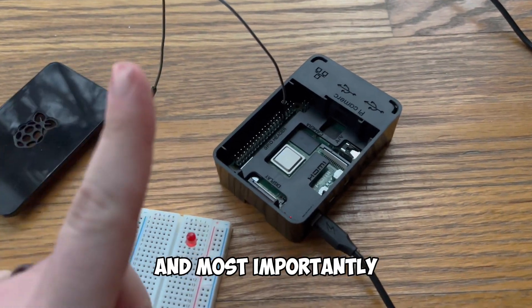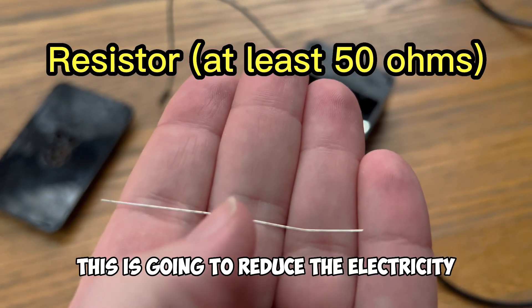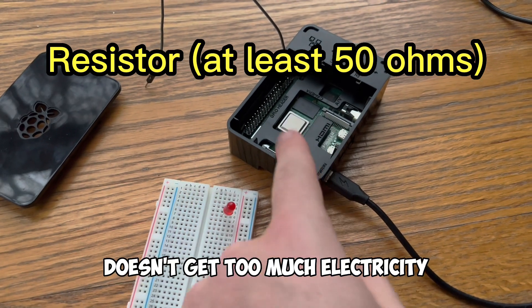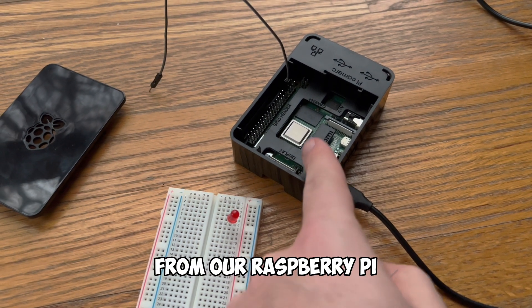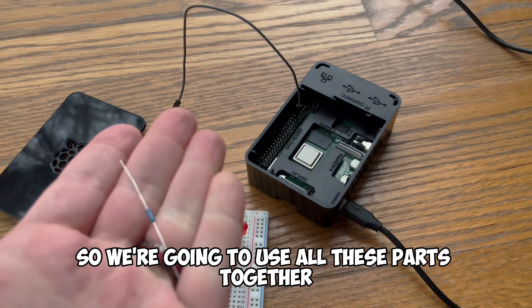our power cord, and most importantly we need this guy which is called a resistor. This is going to reduce the electricity so that our LED light bulb doesn't get too much electricity from our Raspberry Pi and it doesn't explode. So we're going to use all these parts together. Let's show you how.